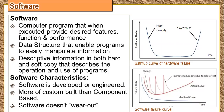Let us see what a software is. Software is nothing but a computer program that when executed provides desired features, functions, and performance. You are feeding something to your computer, it processes it and gives you output. It also has a data structure which will help you to easily manipulate your data, and a database storing your information.